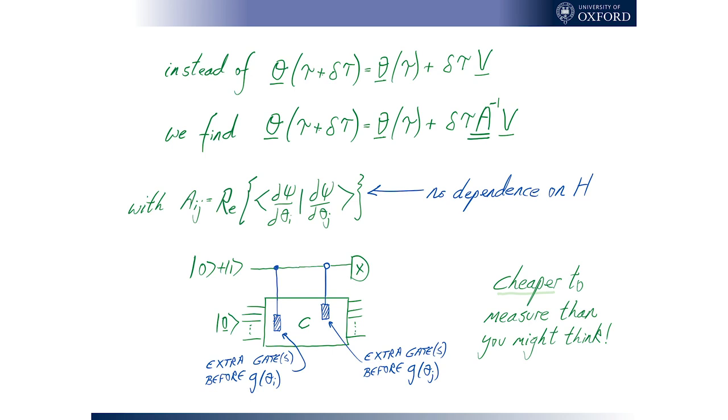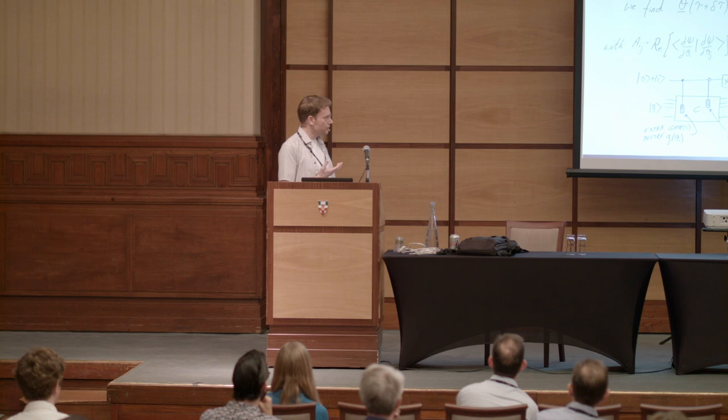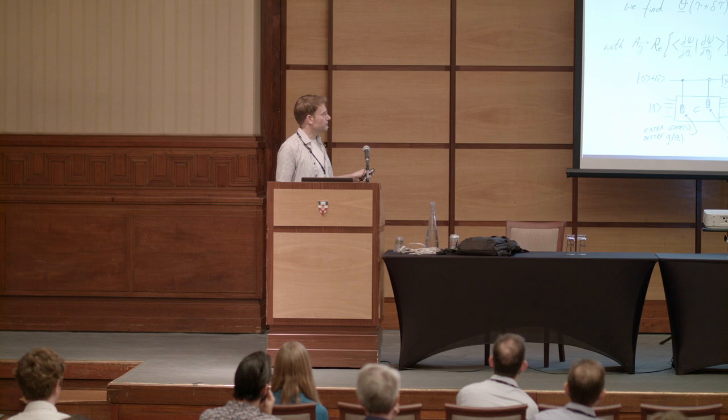But remember that in order to get each term of this gradient vector, we have to move along the sum of terms in the Hamiltonian. And it may well be that there are more terms in the Hamiltonian than there are parameters in the ansatz. In which case, it's actually more expensive to get that vector than it is to get our matrix. And a further remark, which is purely empirical, is that we find that the matrix can be known less accurately than the gradient vector, and it still works well. So actually, I would say in many cases, to do this fancier approach is less than double the effort of doing the simple approach.